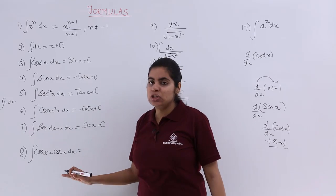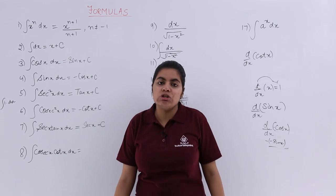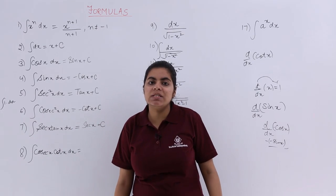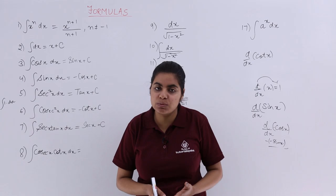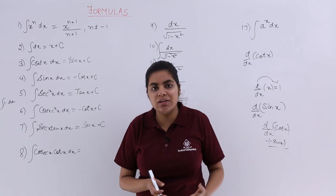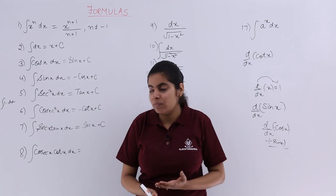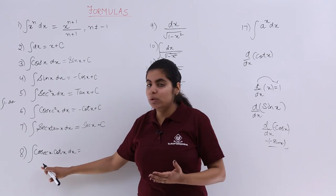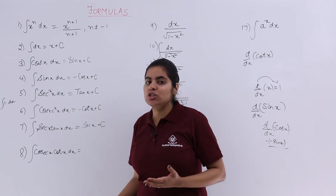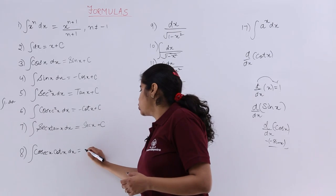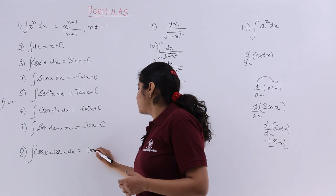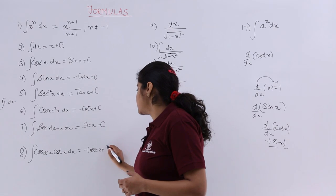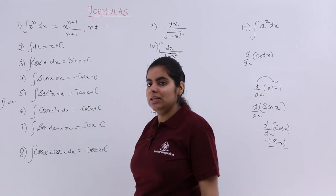Next, for cosecant x cot x: you know that the differentiation of cosecant x is minus cosecant x times cot x. Since we have only cosecant x cot x (without the minus), the answer should be minus cosecant x plus c.